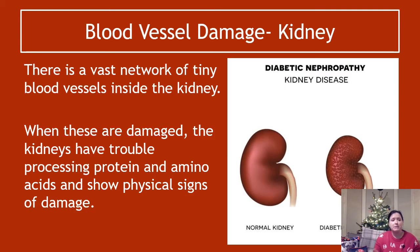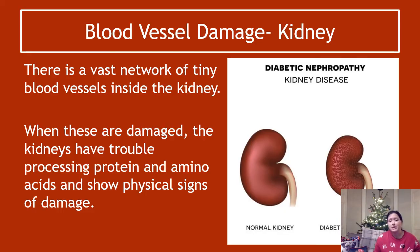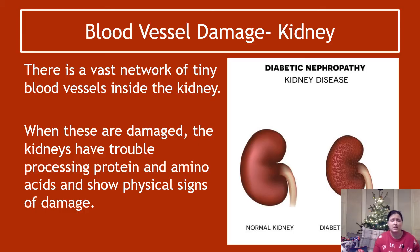Other blood vessel damage — you've got lots of tiny blood vessels inside your kidneys. High blood glucose, because the condition isn't managed correctly, damages the tiny blood vessels in the kidney. When these are damaged, the kidneys have trouble processing and filtering out all the stuff they're supposed to get out of your blood, and it can show physical signs of damage as well.